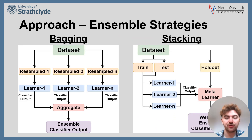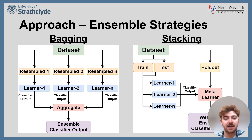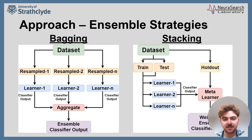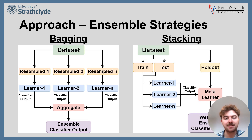Bagging, also known as bootstrap aggregating, has two main components. Firstly, bootstrapping is where the training set is randomly resampled into subsets that can contain multiple instances of the same data point for each learner within the ensemble. These subsets are then assigned to and used to train individual models, with the idea being that since each model has been trained on its own random subset of the data, the ensemble can better generalise for unseen data. Secondly, aggregating is when the ensemble is presented with a testing dataset — it averages the class prediction across each learner and selects the class with the highest number of votes.